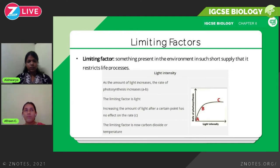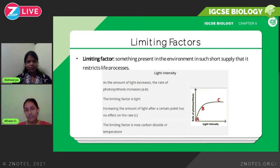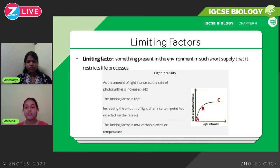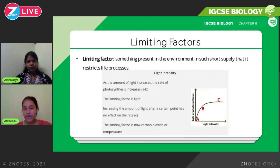This could come in Paper 4, the theory paper, where they give you a graph and ask you to describe what's happening. When asked to describe a graph, you don't give reasons — you just state what's happening. For example: from point A to B, as light intensity increases the rate of photosynthesis increases; however, after point C, increasing light intensity does not affect the rate of photosynthesis, meaning the limiting factor is now temperature or carbon dioxide concentration. Similar graphs exist for CO₂ and temperature.